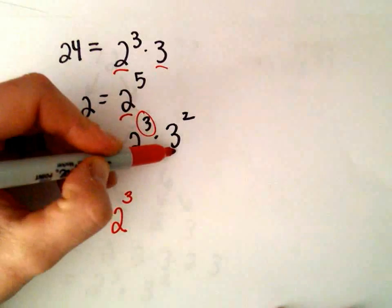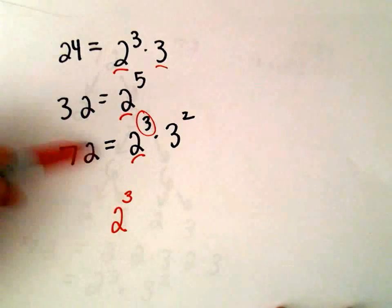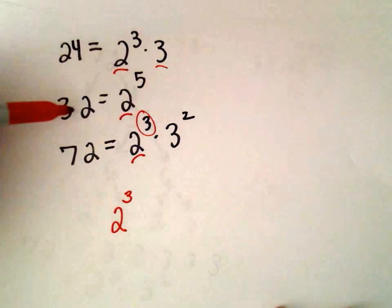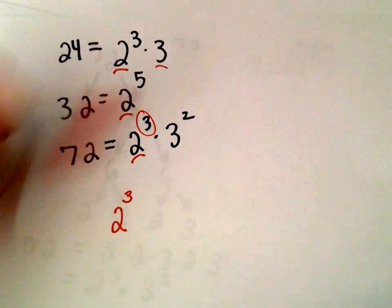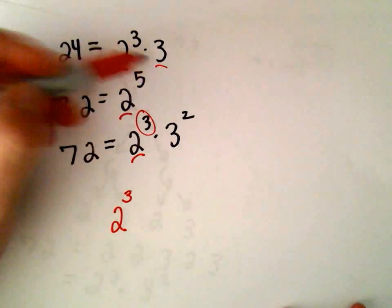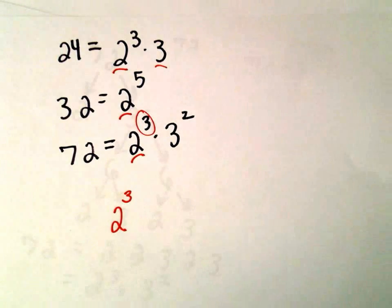The next thing I look at is there's a 3 squared in our number 72, but there's no 3 in the 32. So we can't factor a 3 out of all of these numbers.